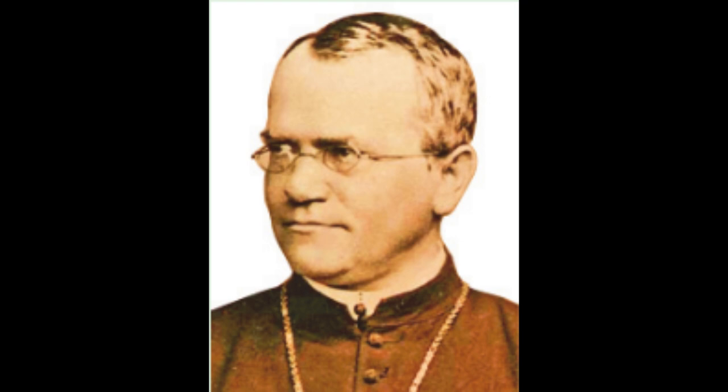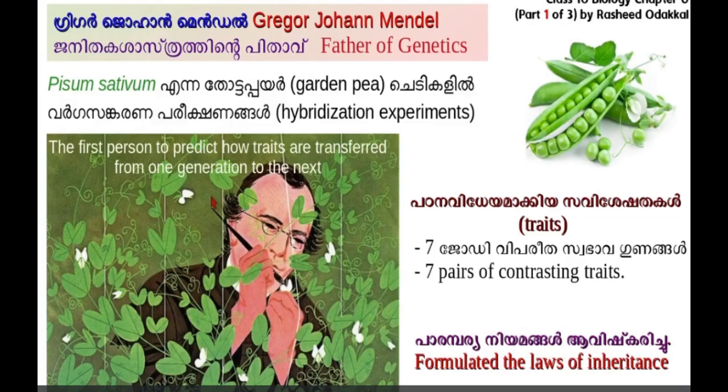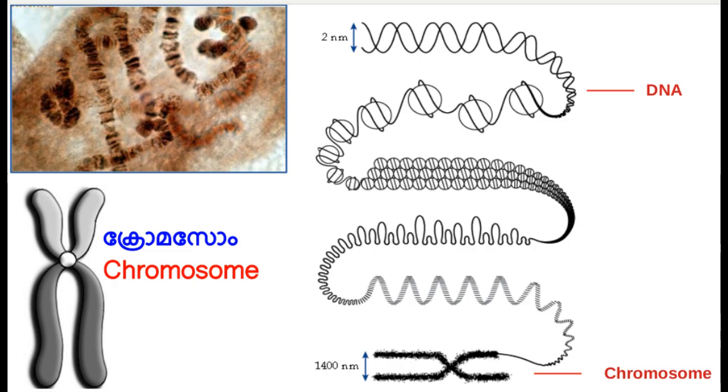Gregor Johann Mendel is considered as the father of genetics, the branch of science that deals with heredity and variation. The inferences from his hybridization experiments in pea plants, i.e. Pisum sativum, led to the foundation of genetics. He studied the inheritance of 7 pairs of contrasting traits in pea plants and explained that each character is controlled by a pair of factors. Later studies proved that the factors are the genes present in the DNA in chromosomes.